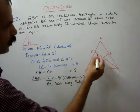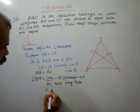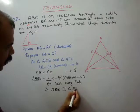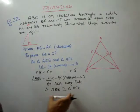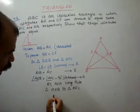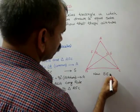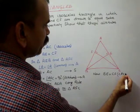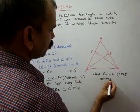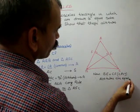...both triangles are congruent. That is, triangle AEB is congruent to triangle AFC. Since they are congruent, we can say BE is equal to CF by CPCT. Therefore, the altitudes are equal.